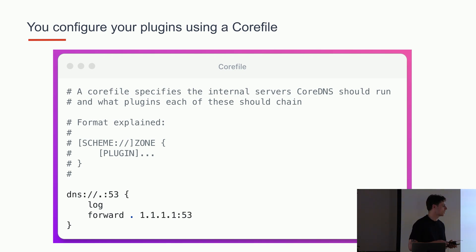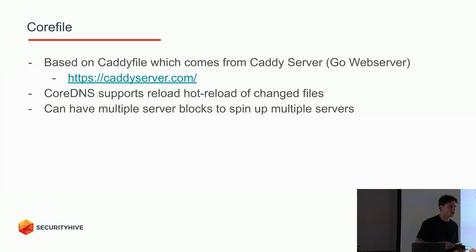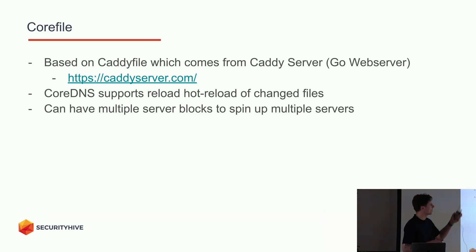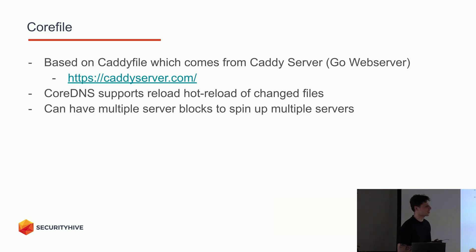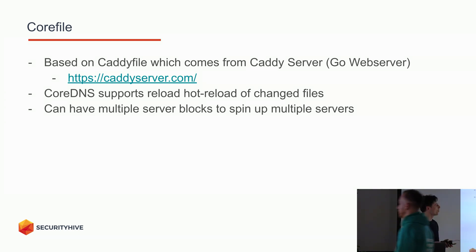If we receive a request it goes through the log plugin first, then it will go to the forward plugin — it's just a DNS proxy — and we're going to forward it to the Cloudflare DNS. The Corefile is actually a fork from the Caddy file; the Caddy HTTP server is a very popular Go project also entirely written in Go. One cool thing about the Corefile is that it supports a reload plugin, so once CoreDNS starts you can make changes to the Corefile and it will hot-reload a new configuration while still serving DNS requests.